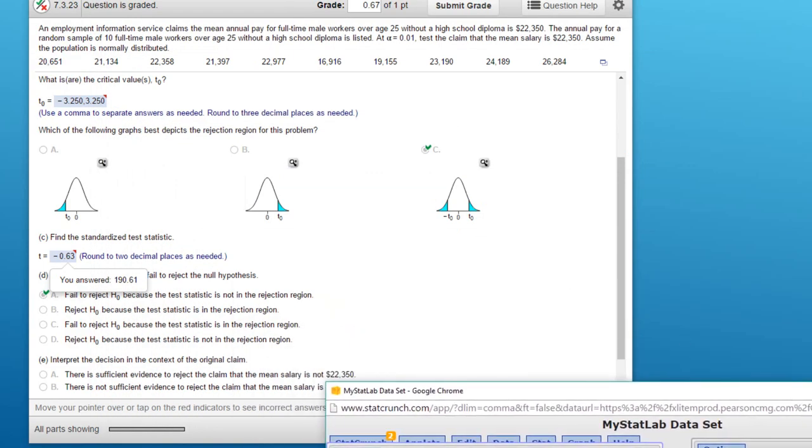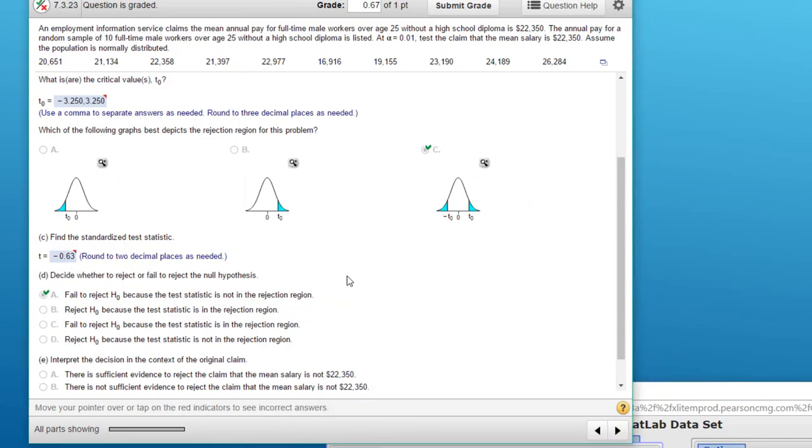So we fail to reject. Both things tell us to fail to reject the null. We bring this down here and do the last part. What do we decide to do? We fail to reject the null because the test statistic is not in the rejection region. And also, StatCrunch gave us a p-value which was greater than alpha, much, much greater, which also says do not reject. We fail to reject.